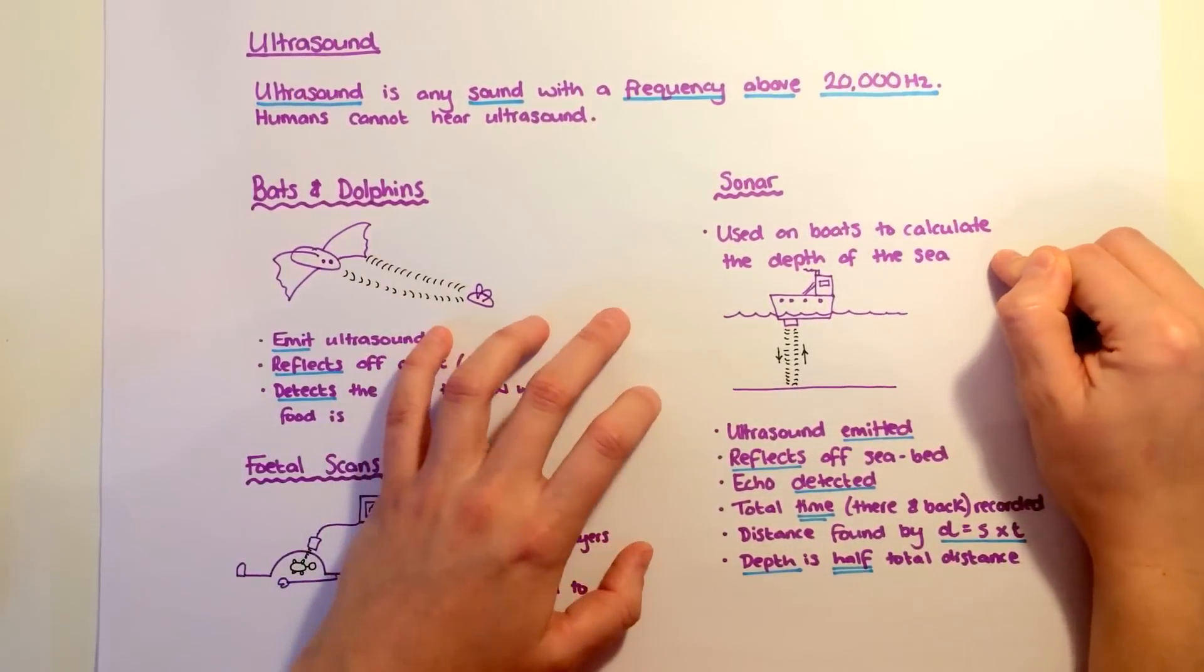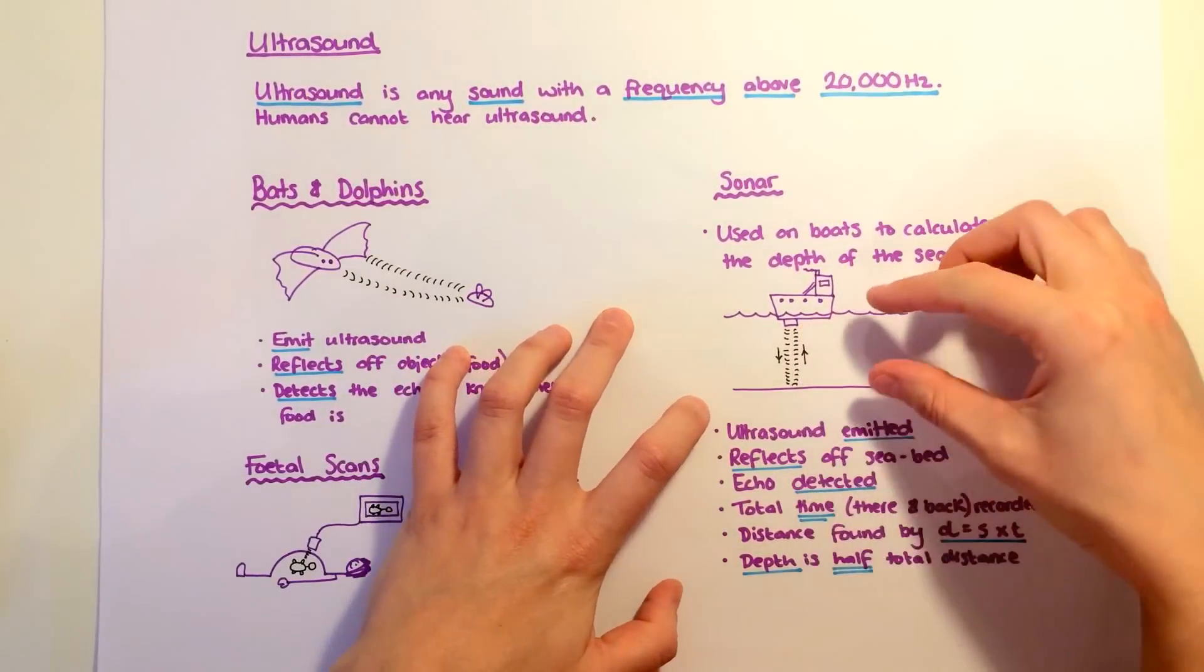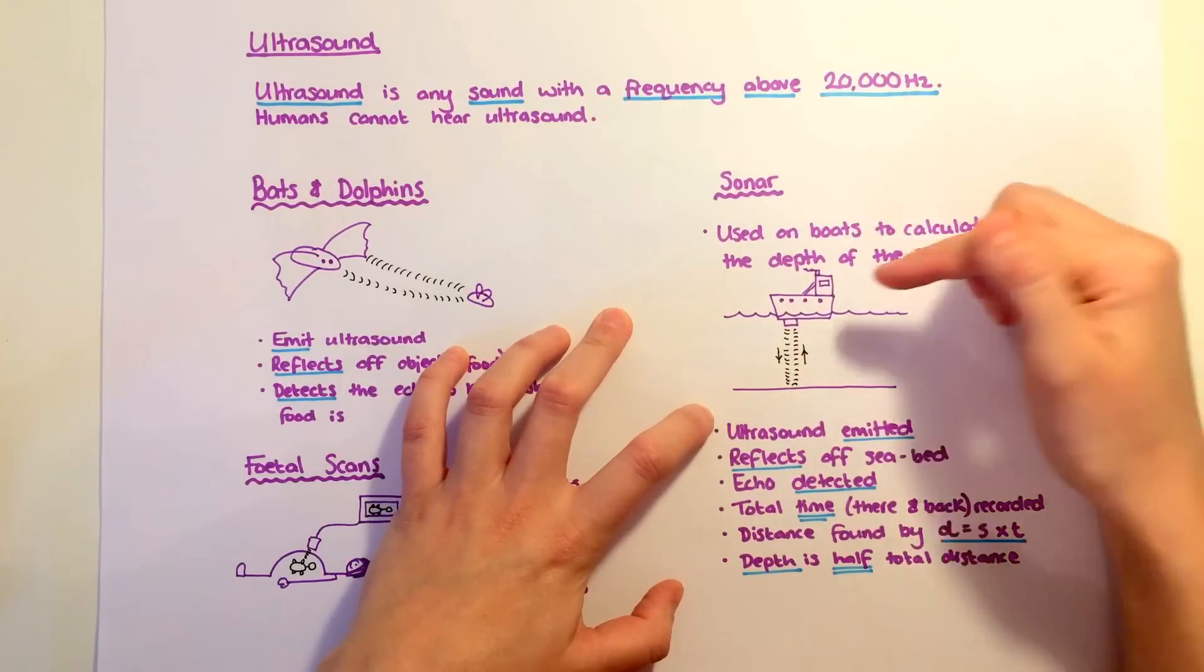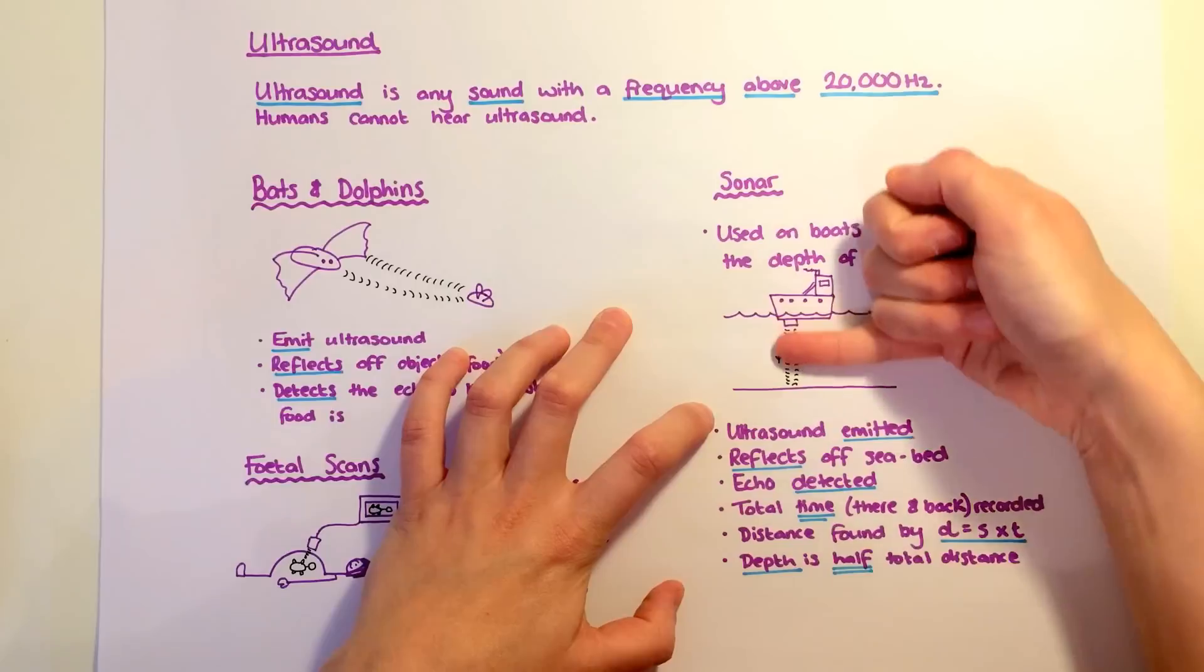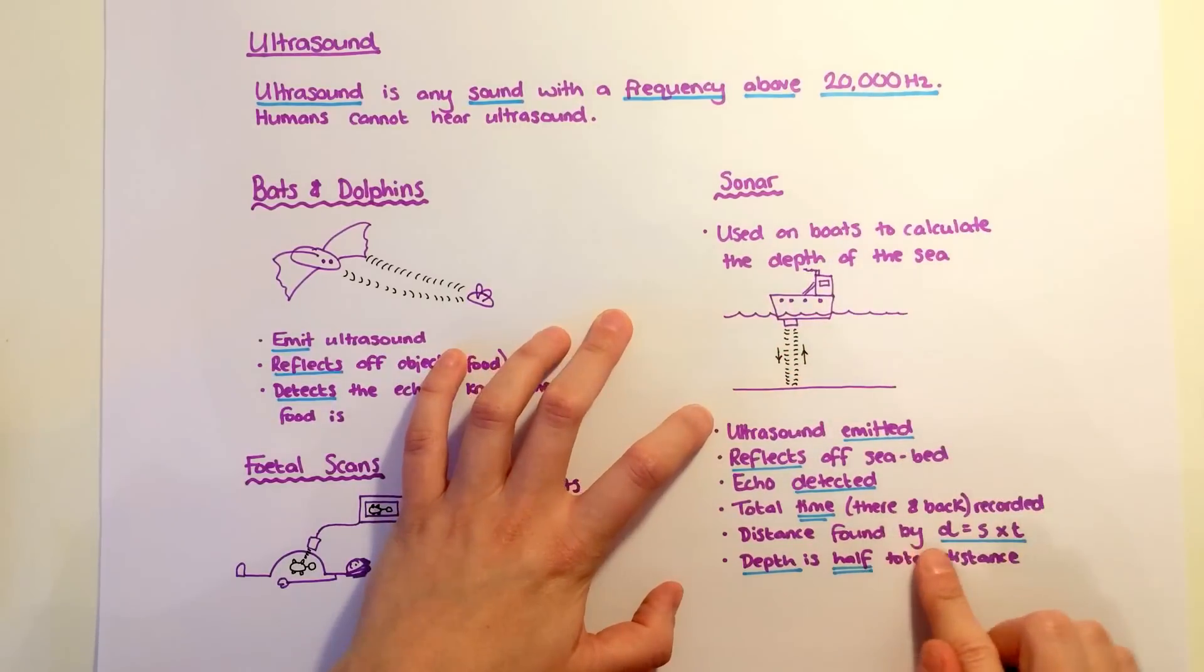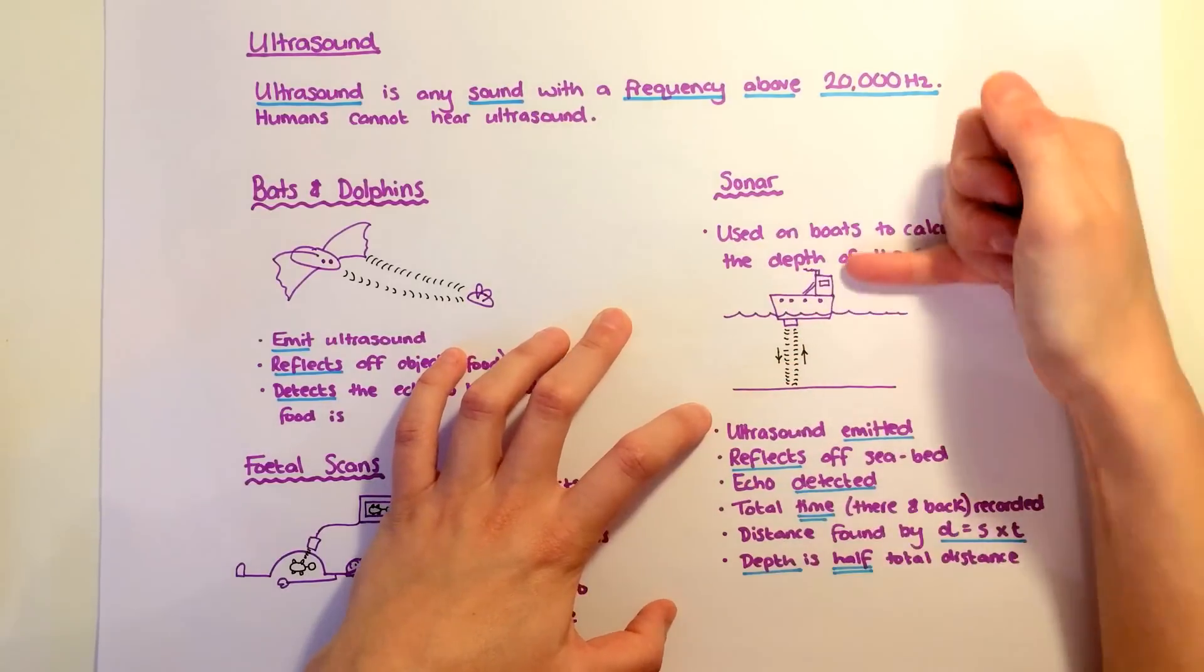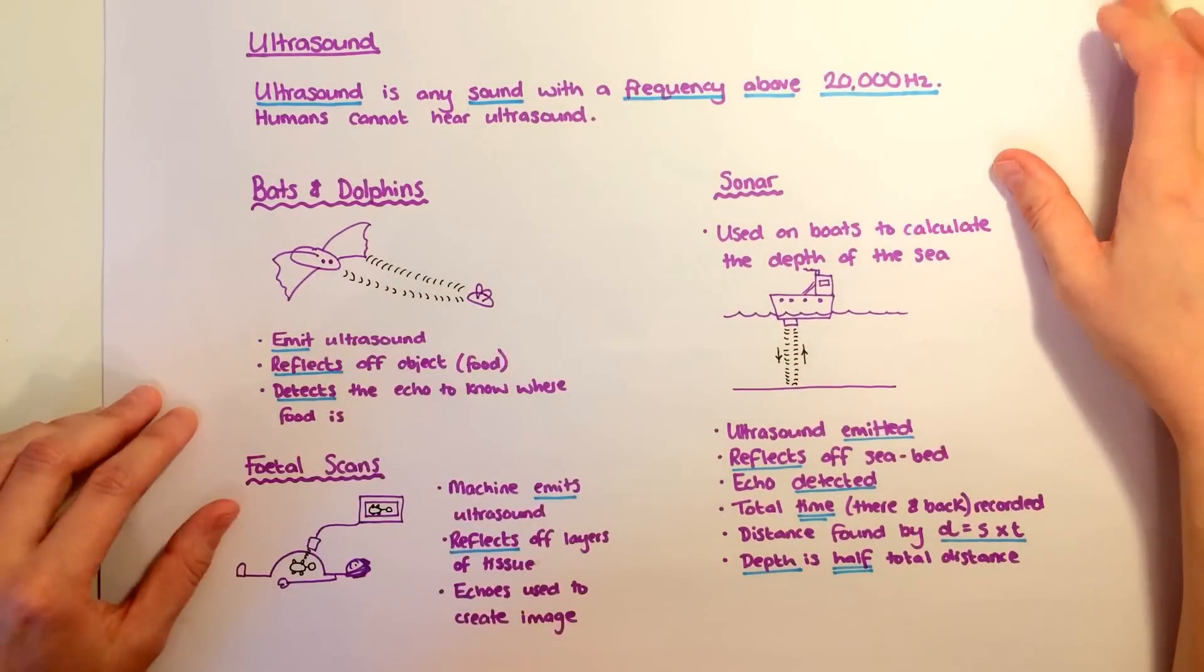Ultrasound is used in sonar machines on boats to calculate the depth of the sea. Ultrasound is emitted and reflects back up again. The machine records how long it takes to travel there and back and can work out the distance travelled by speed multiplied by time. The depth of the sea is just half of that distance travelled.